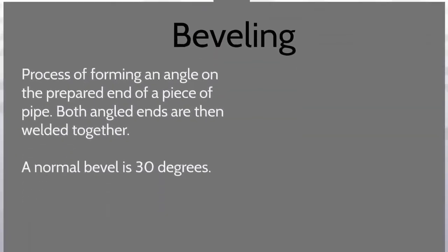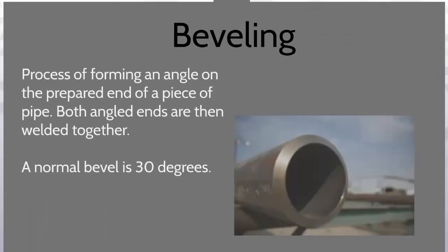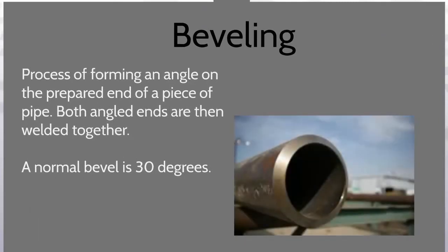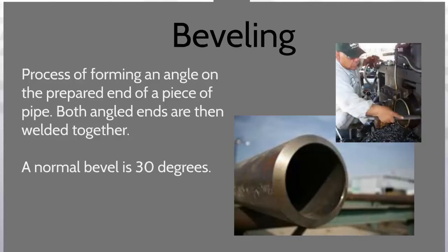Beveling is the process of forming an angle on the prepared end of a piece of pipe. Both angled ends are then welded together. A normal bevel is 30 degrees.